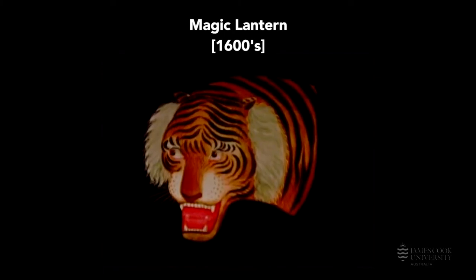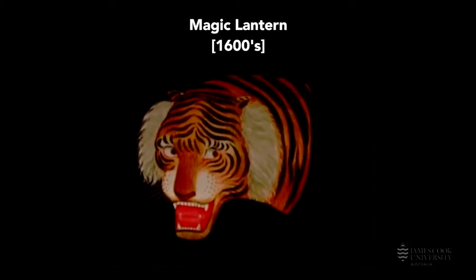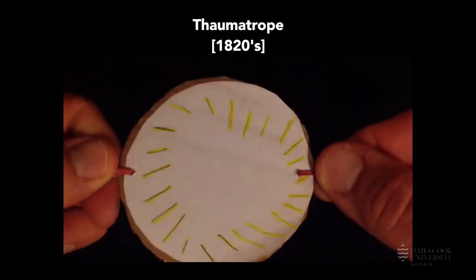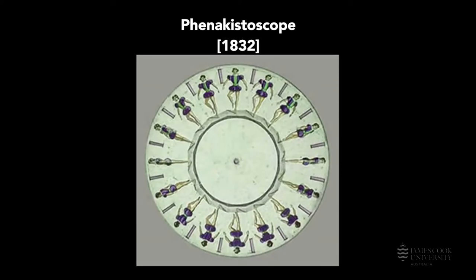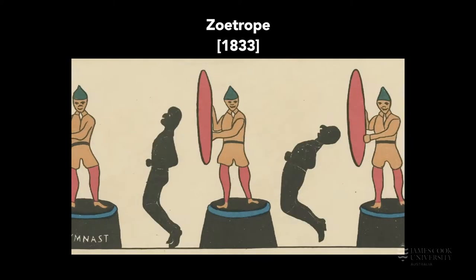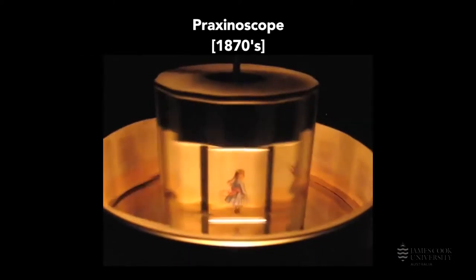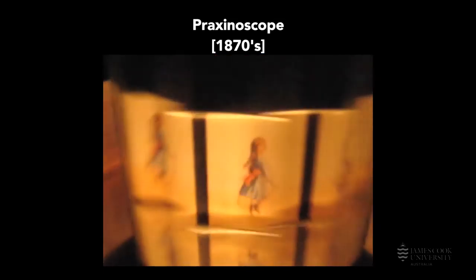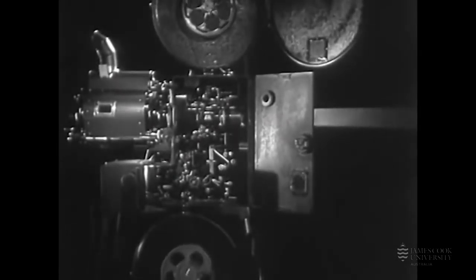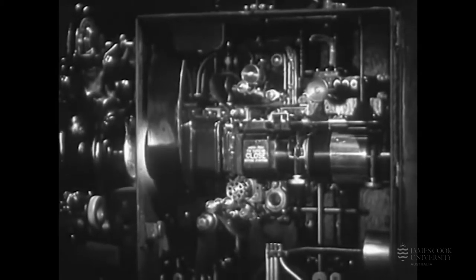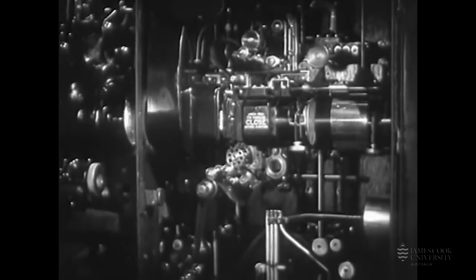From the 1600s, optical devices such as the magic lantern, the thaumatrope from the 1820s, the phenakistoscope from 1832, the zoetrope from 1833, and the praxinoscope from the 1870s created the illusion of motion. But it was not until the development of the film strip that dynamic media became a revolutionary art form and mass entertainment. Film strips would move through a camera, capturing the action at up to 25 image frames per second. Once processed, the films were then projected to stunned audiences.